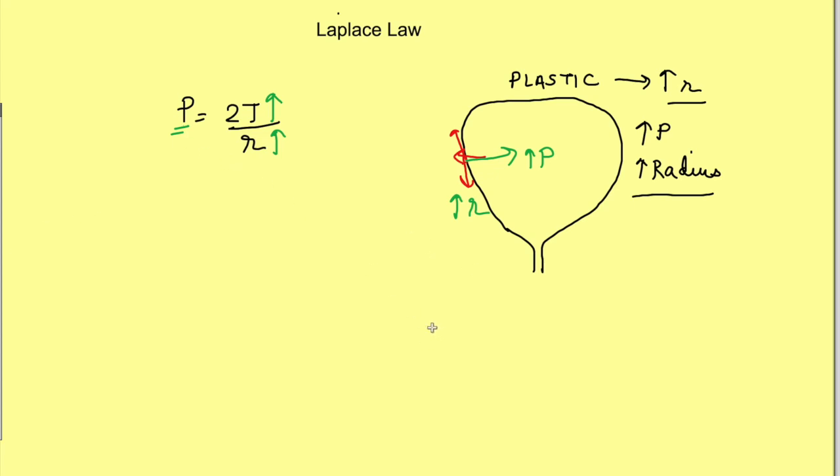But there is one more thing. The neck of the bladder is very narrow, meaning the radius is very small, and it is also a bit lengthy.